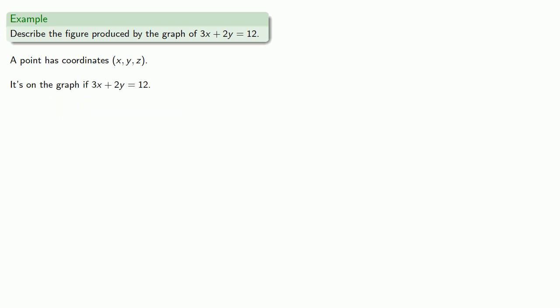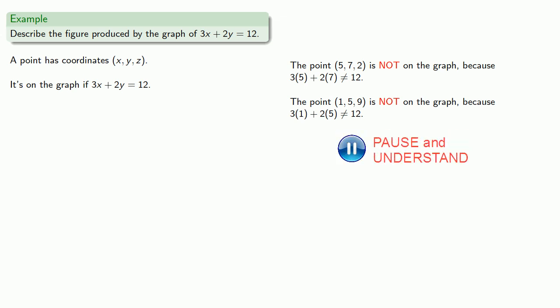So let's find a few points that are not on the graph. How about the point 5, 7, 2? Well, this is not on the graph because 3x plus 2y is not equal to 12. Likewise the point 1, 5, 9 is not on the graph because 3x plus 2y is not equal to 12.